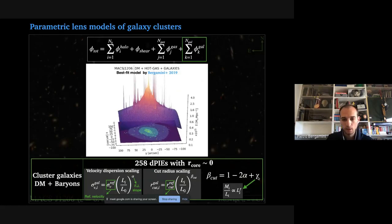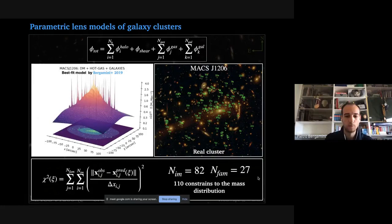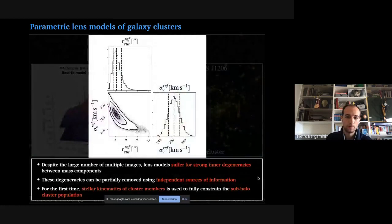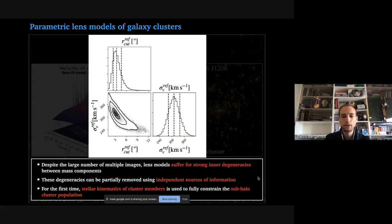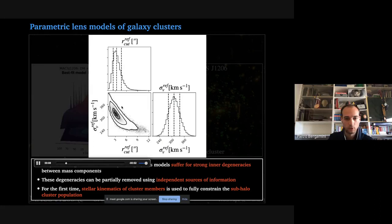The problem is that despite using hundreds of multiple image positions to constrain the lens model, it still suffers from strong inner degeneracy between mass parameters. For example, there is a well-known degeneracy between the reference truncation radius and the reference velocity dispersion of the cluster member scaling relation — essentially, it is equally probable to decrease the central velocity dispersion while increasing the truncation radius and still obtain an equally good model.